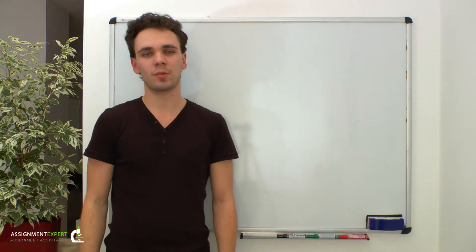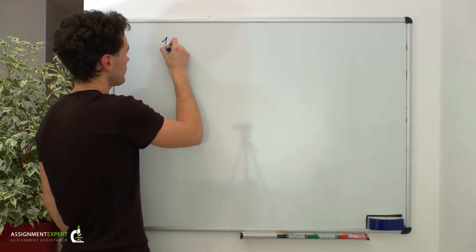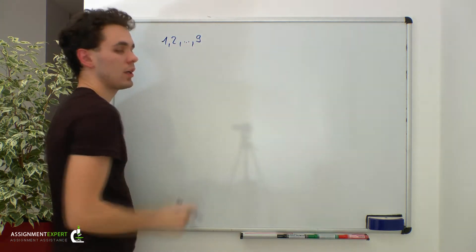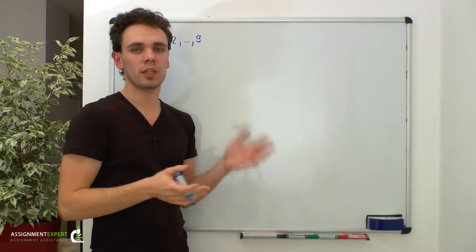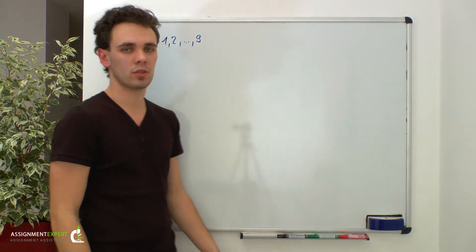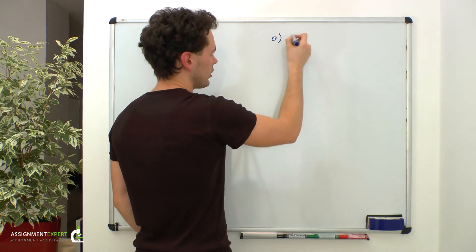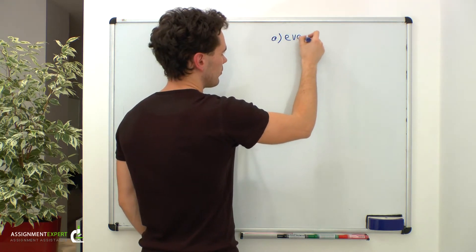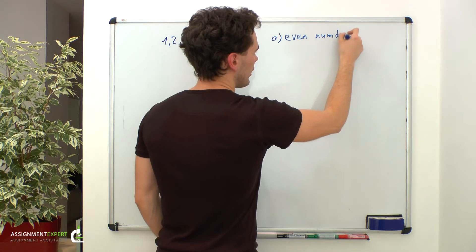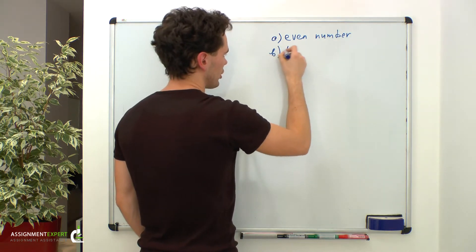Suppose we have 9 cards with numbers from 1 to 9. We put these cards into a box and mix them up, then we pick one card out of the box. What is the probability of A — getting a card with an even number — and B — getting a card with a two-digit number?